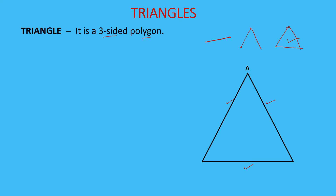The name of the triangle is A, B, and C — so it is triangle ABC. In this triangle, the sides are: side AB, side BC, and side AC. The line segments that make up the polygon are called the sides. There are three sides: AB (or BA), BC (or CB), and AC (or CA).